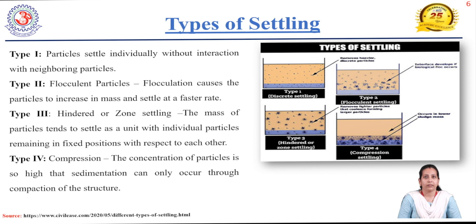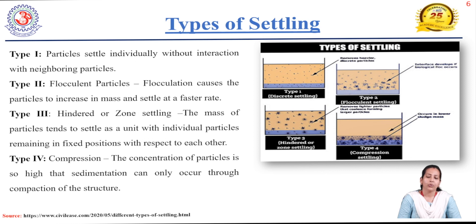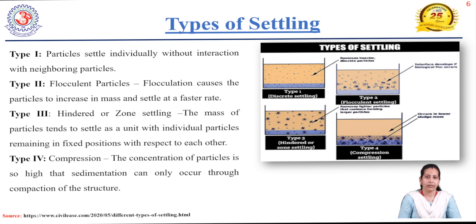There are four types of settling. Type one: particles settle individually without interaction of neighboring particles — a natural gravity process with no chemicals. Type two: flocculent settling, where flocculation causes particles to increase in mass and settle at a faster rate. After adding specific chemicals, the suspended or colloidal particles form a floc and tend to settle at the bottom of the tank.